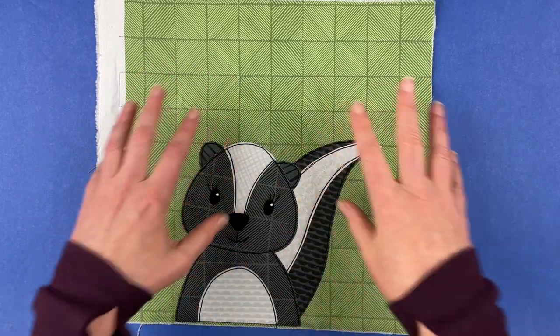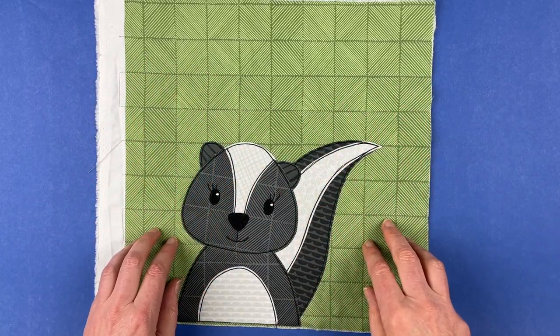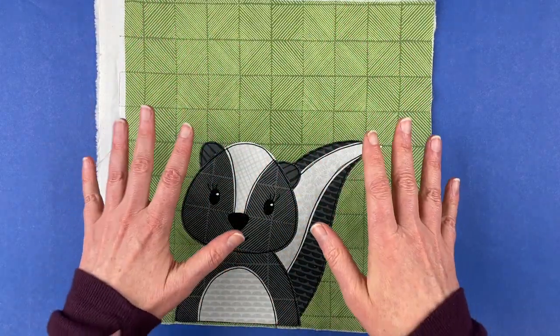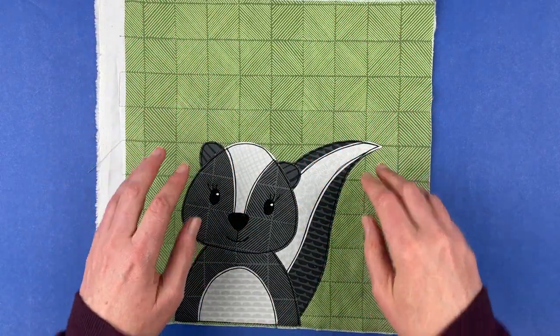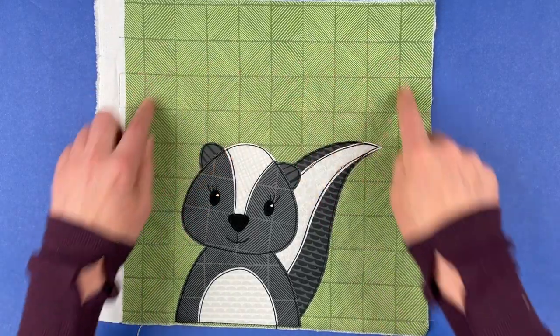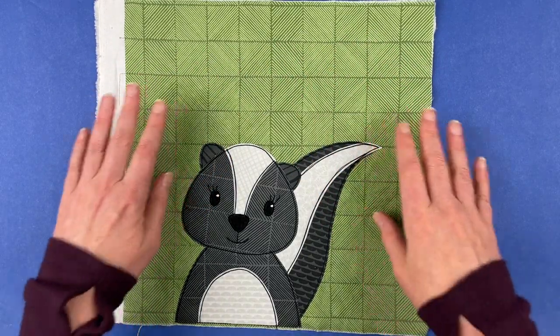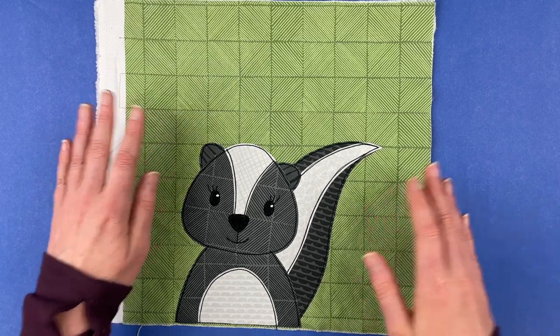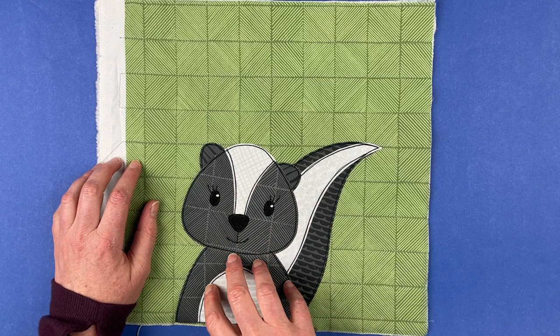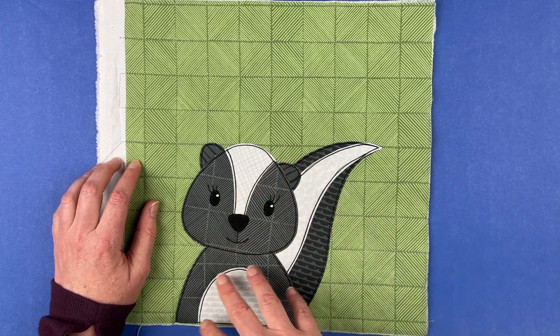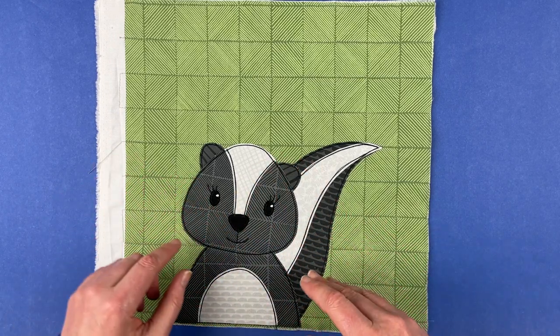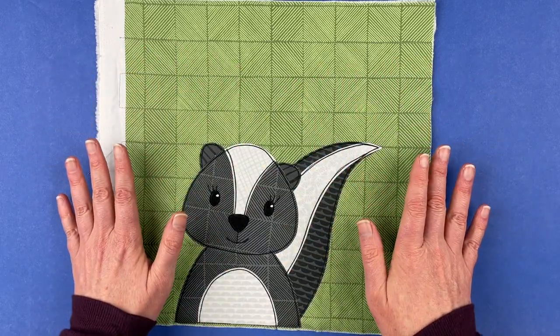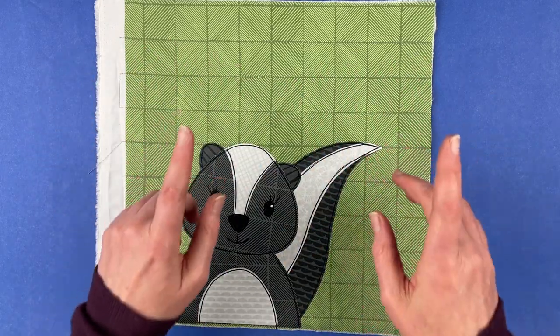But I also wanted to show you a couple of other different color options that I did. So this one is the sample that you'll see on the cover of the Woodland Critters applique pattern. All of the background blocks in that sample use different fabrics from the Avocado Blenders collection that I have in my Spoonflower Shop. And all of the animals use realistic animal colors from the Animal Kingdom Blenders collection. So that is the one that you see on the cover of the Woodland Critters quilt pattern.